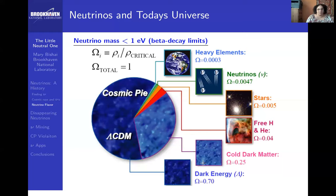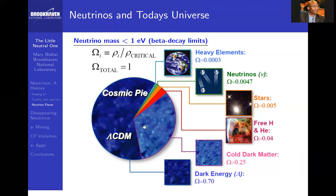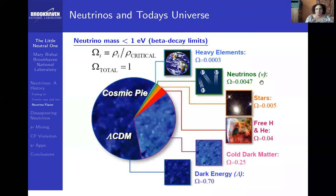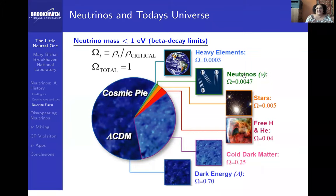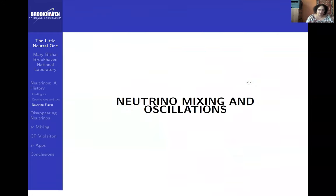Just a reminder, because this is a question that always comes up: if you look at the energy and mass distribution in the universe, neutrinos are not dark matter. Dark matter is 25%, dark energy is 70%. Neutrinos are the most abundant of the elementary particles known, but they're only 0.5%.